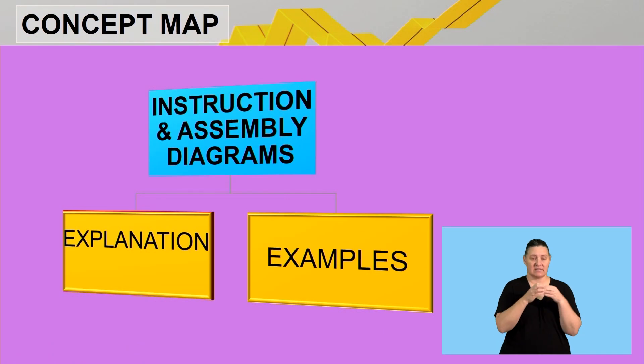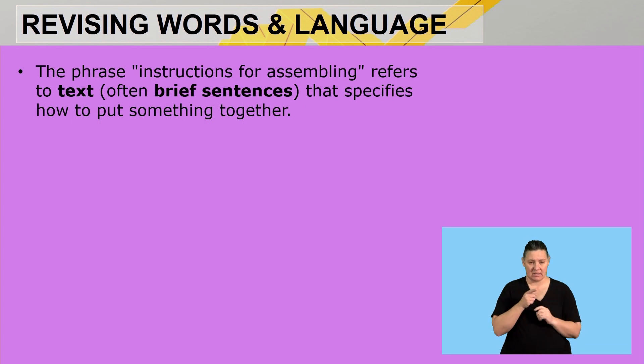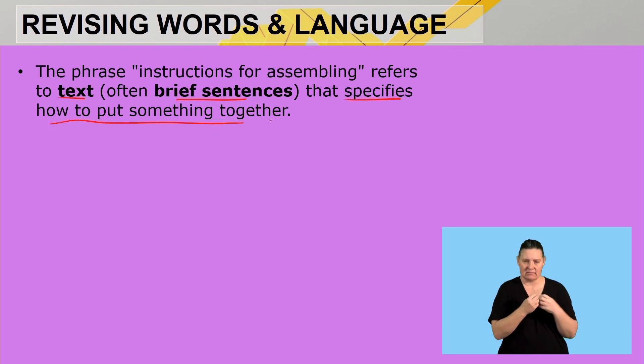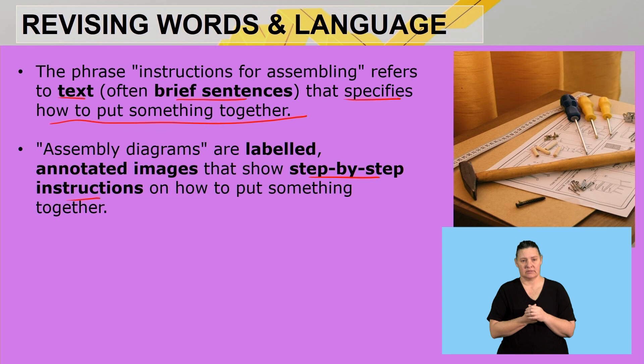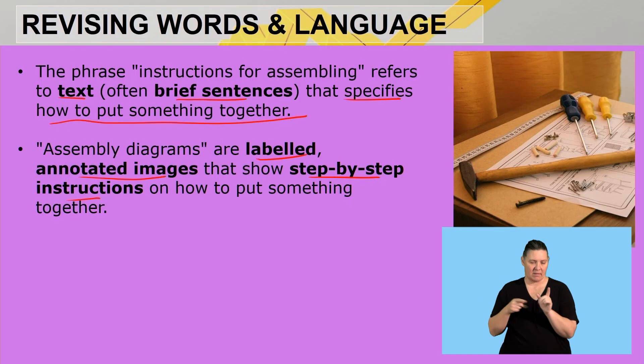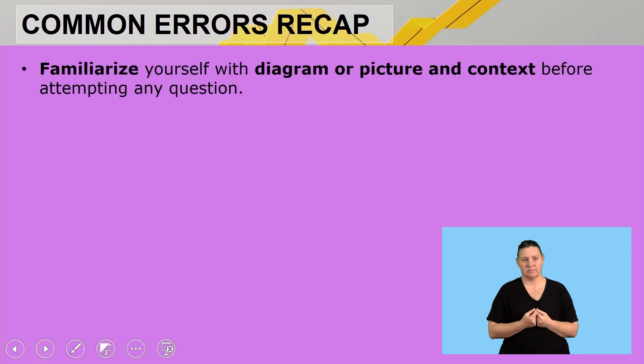Welcome back after our advert break. Let me quickly wrap up today's lesson. The focus of today's lesson is on instruction and assembly diagrams. Instructions for assembling refers to text — often brief sentences — that specifies how to put something together. Assembly diagrams are labeled, annotated images that show step-by-step instructions on how to put something together.